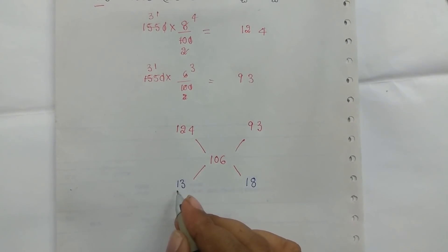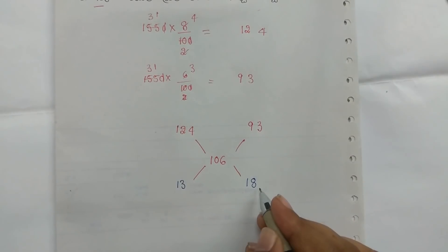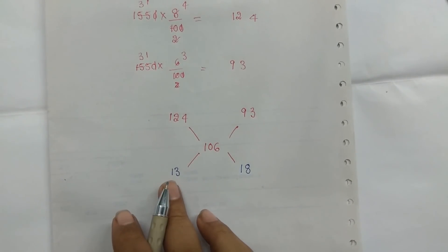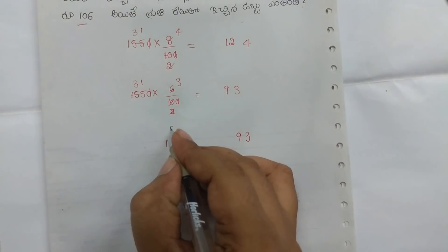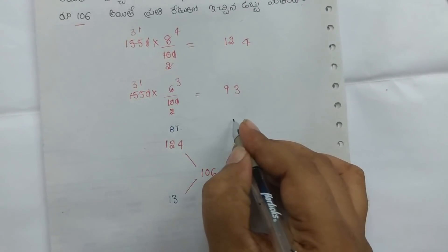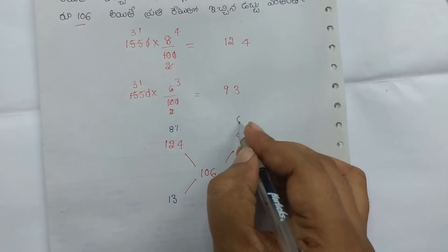The ratio is 13 to 18. So the first part is 8 percent. This is 8 percent. This is 6 percent.